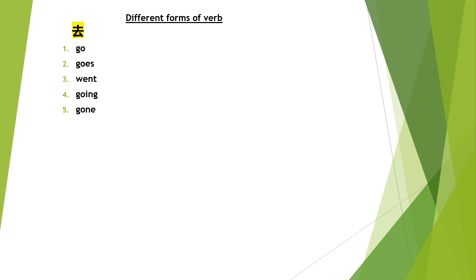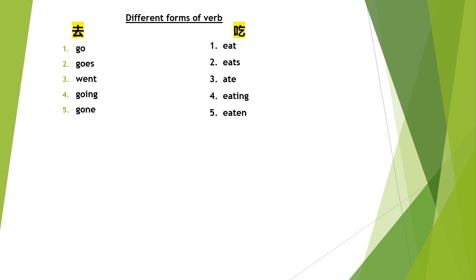Another example: 'chi' (吃) means eat. In English: eat, eats, ate, eating, and eaten. So you see, in Chinese there's only one verb — chi. But in English, you can have different forms: eat, eats, ate, eating, eaten.